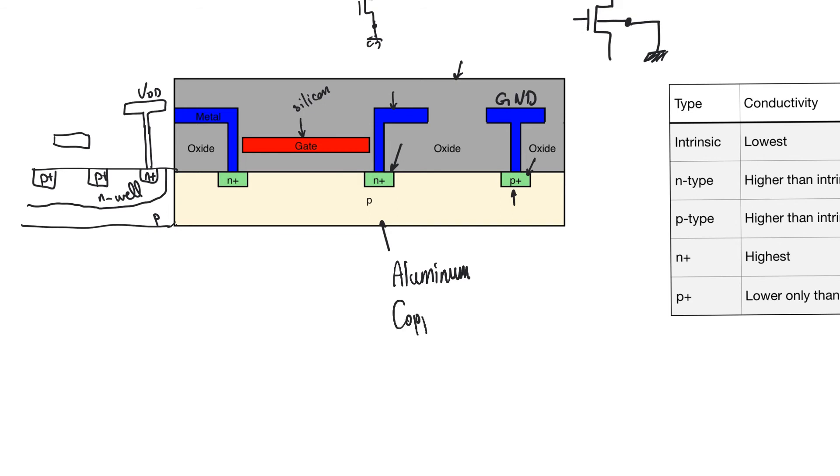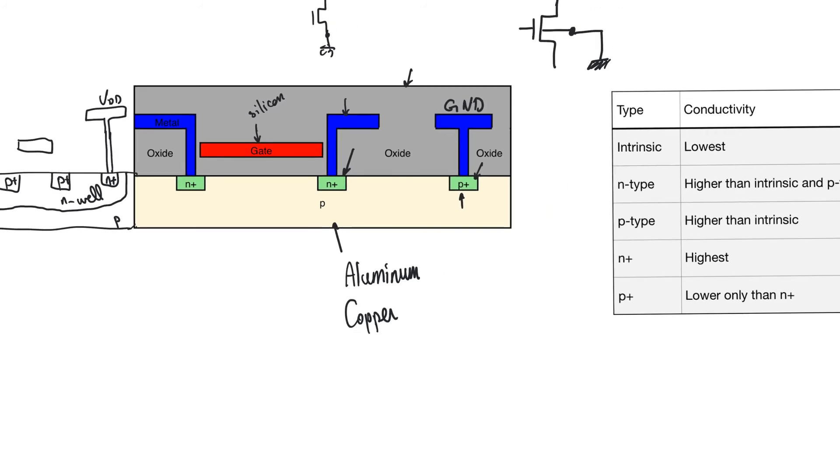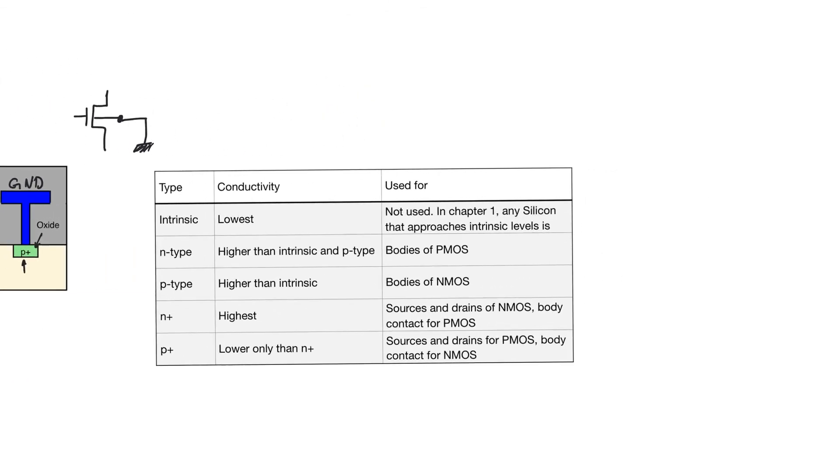Now, it's mostly copper. So the reason we use copper is because it has a higher conductivity than aluminum. Higher conductivity will translate into lower wire resistance, which translates into lower wire delay, which is really important. However, patterning copper wires is a little bit more challenging than patterning aluminum wires.